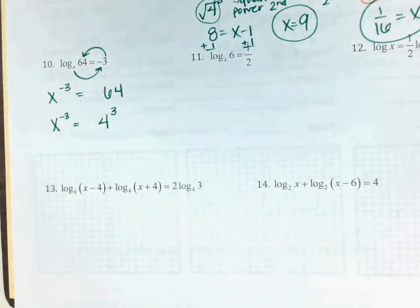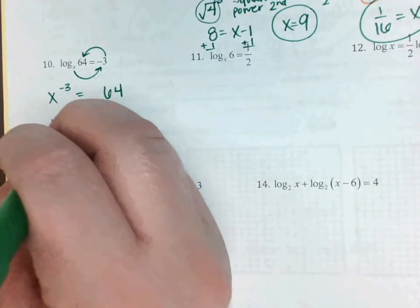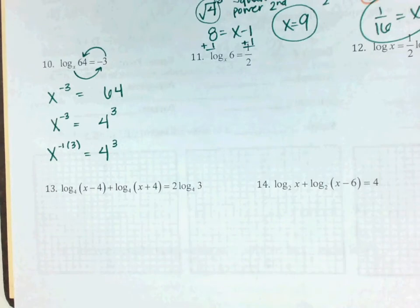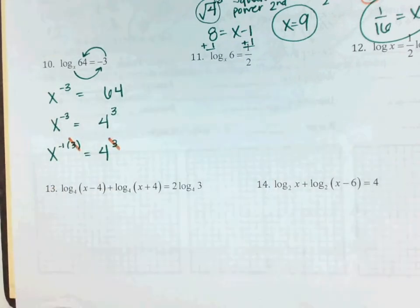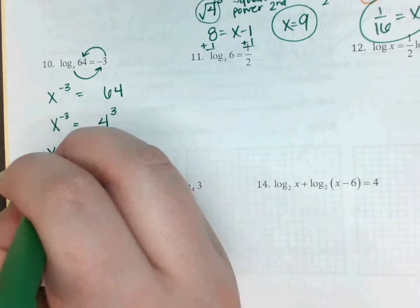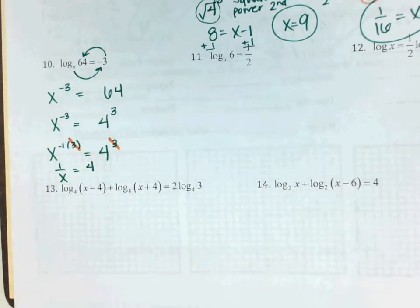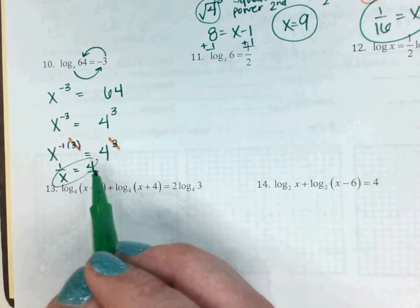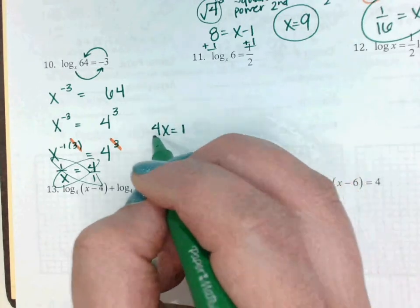When I get to this step, are those 3s matching? Not exactly — I can't cross them out yet. So I'm going to break this side up into x to the negative 1 times 3, and 4 to the 3. Now I can cross the 3s out — negative 3 is the same as negative 1 times 3. My 3s are gone. x to the negative 1 is the same as 1 over x, equals 4. At that point you can flip both sides or cross multiply: 4x equals 1, then divide by 4, x equals 1 over 4.